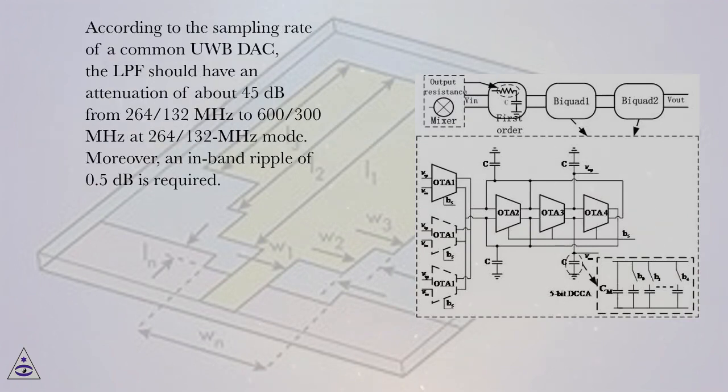According to the sampling rate of a common UWB DAC, the LPF should have an attenuation of about 45 dB from 264-1300 MHz to 600-3000 MHz at 264-1300 MHz mode.